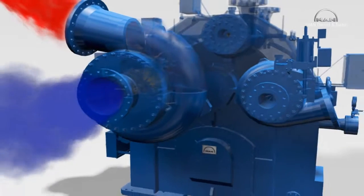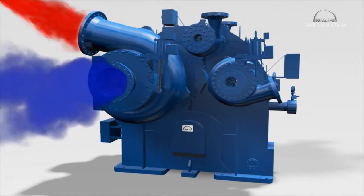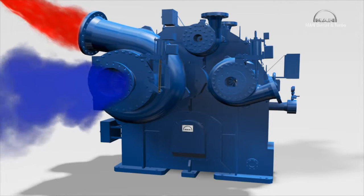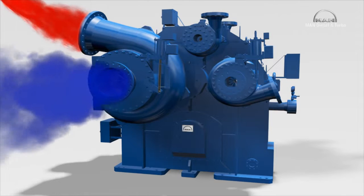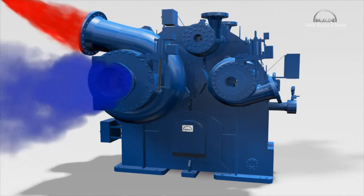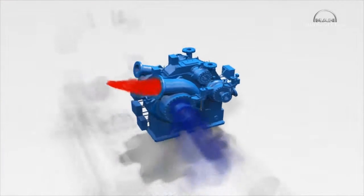With each compression, the gas temperature rises. This in turn somewhat reduces the density and increases the volume. Because this means that the following compression process would then require more energy, the gas flows after each stage through piping to an intercooler that reduces the gas temperature before the gas enters the next stage.